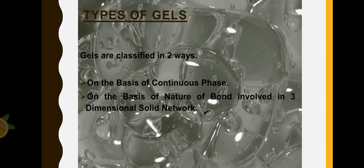Next, types of gels. Gels are classified in two ways: one is on the basis of the continuous phase, and second is on the basis of the nature of bond that is involved in the three-dimensional solid network.